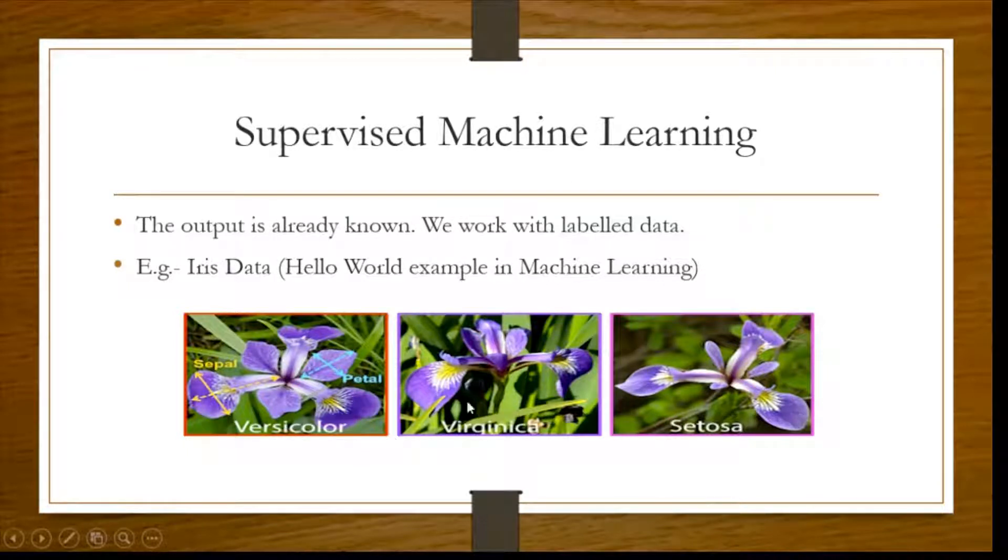Now I am saying we will use classification algorithms to train a model for this. Why classification? Because we already know to which class the flower will fall in. Either, given the dimensions, the petal length and petal width or the sepal length and sepal width, given these things we will identify which flower is in which class. So this is a classification problem.